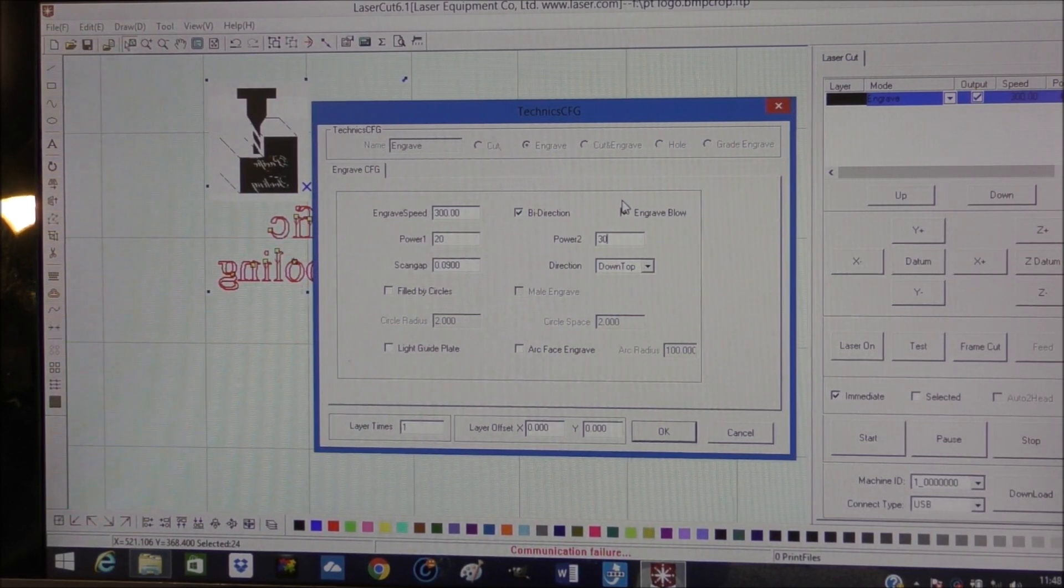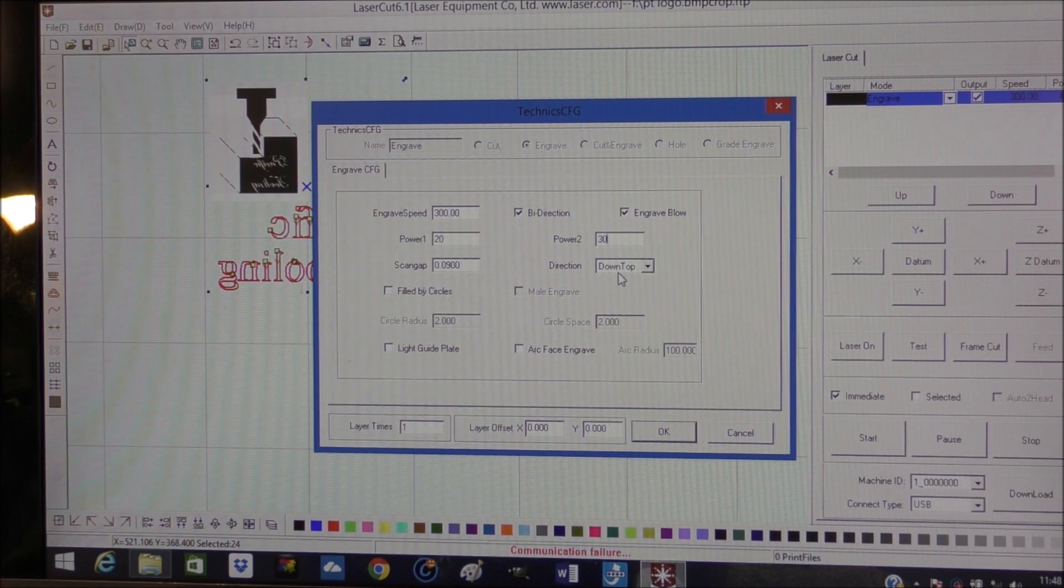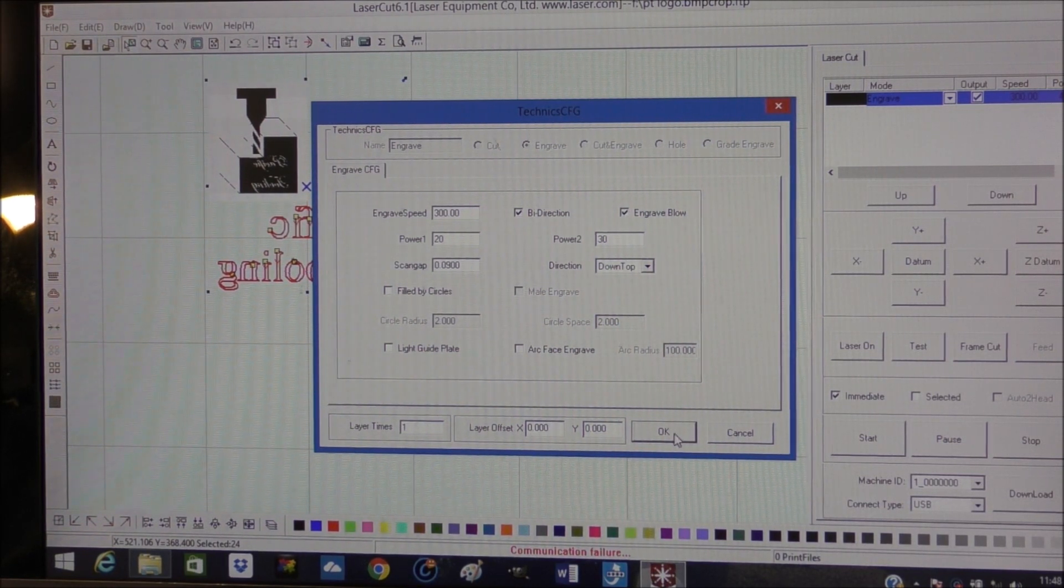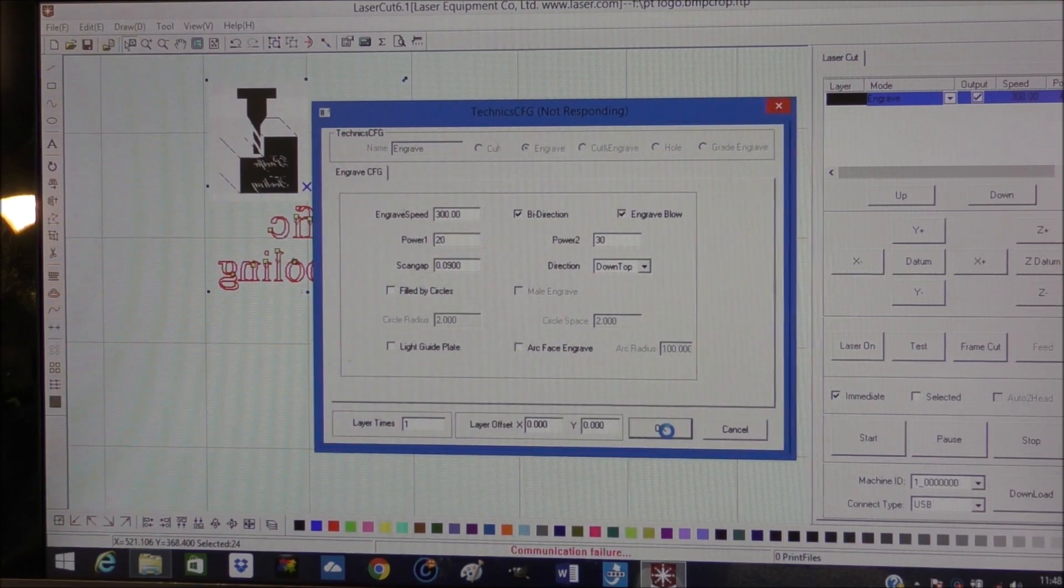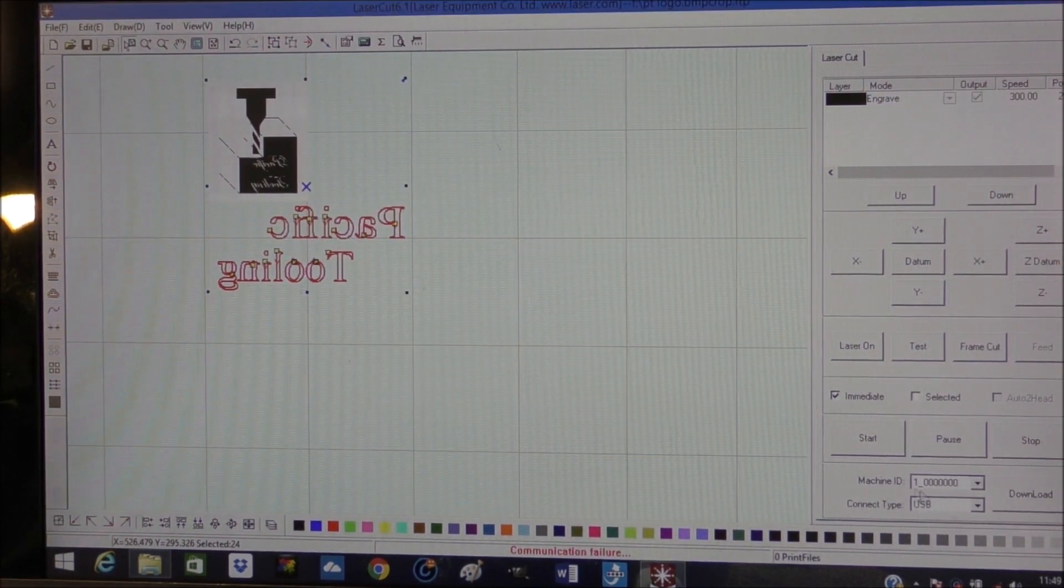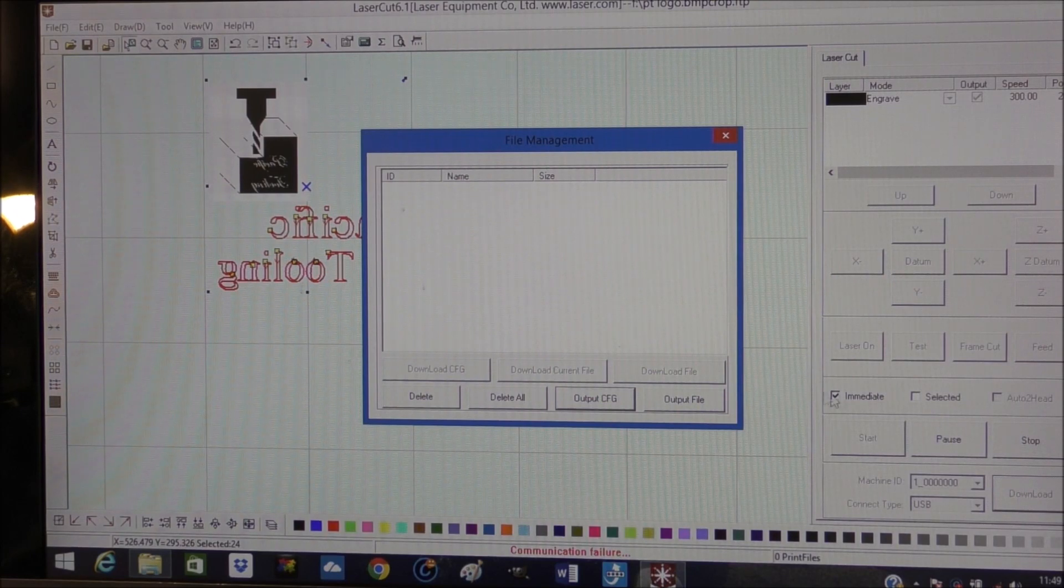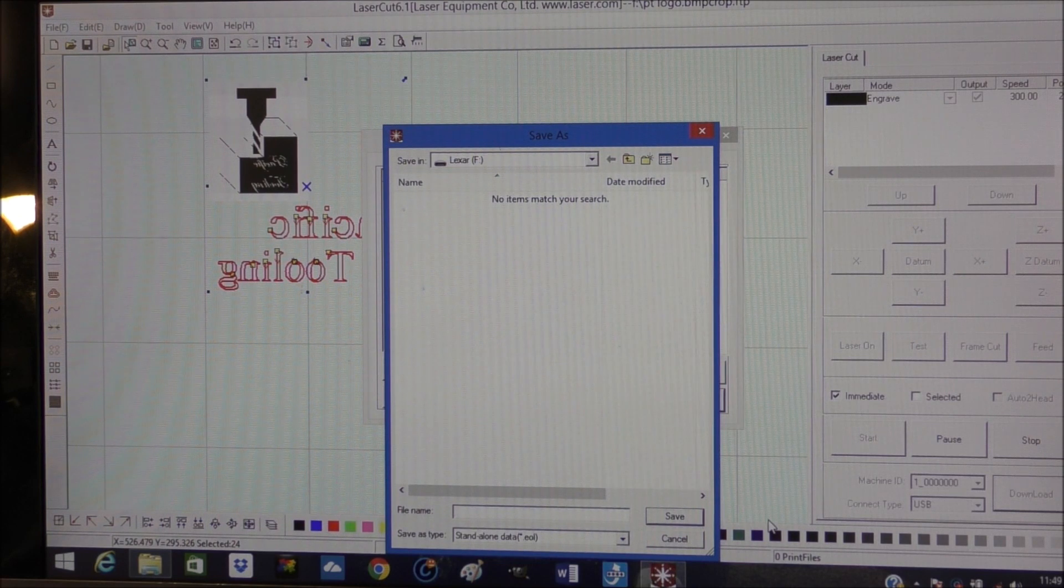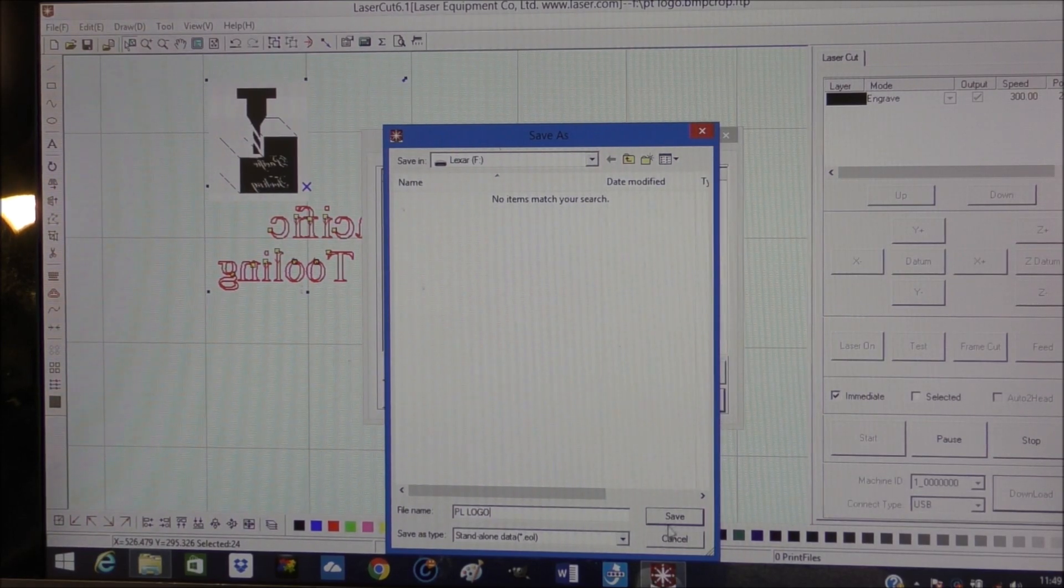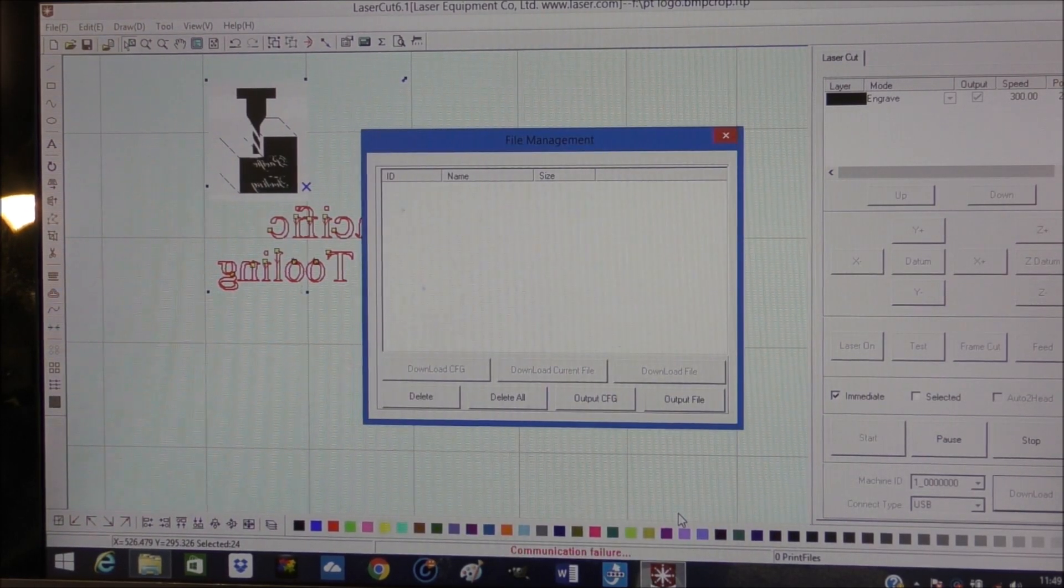Now I'm setting up the engraving. I'm just indicating here that the settings that work for plexiglass have about the right penetration, but that's something that you can experiment with yourself. And then just save it to a flash drive.